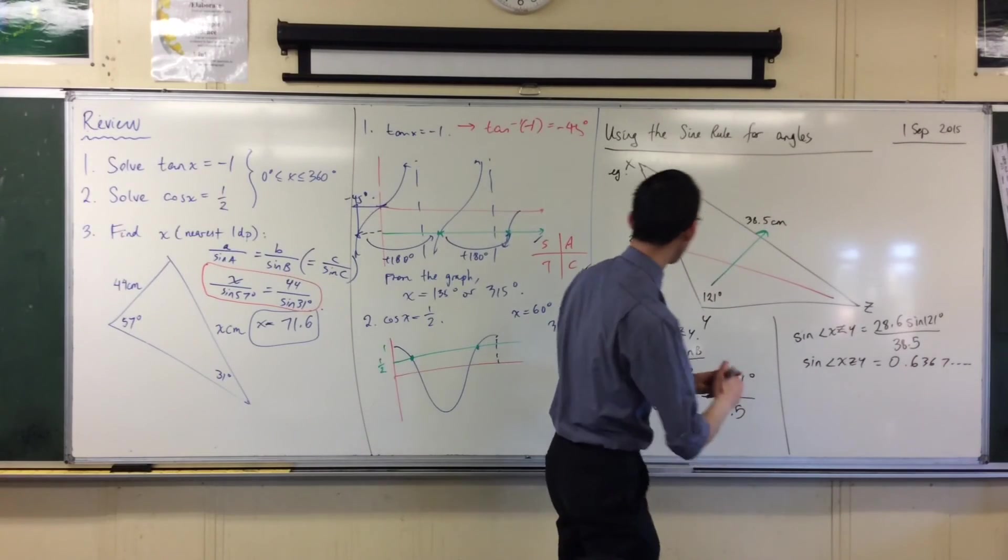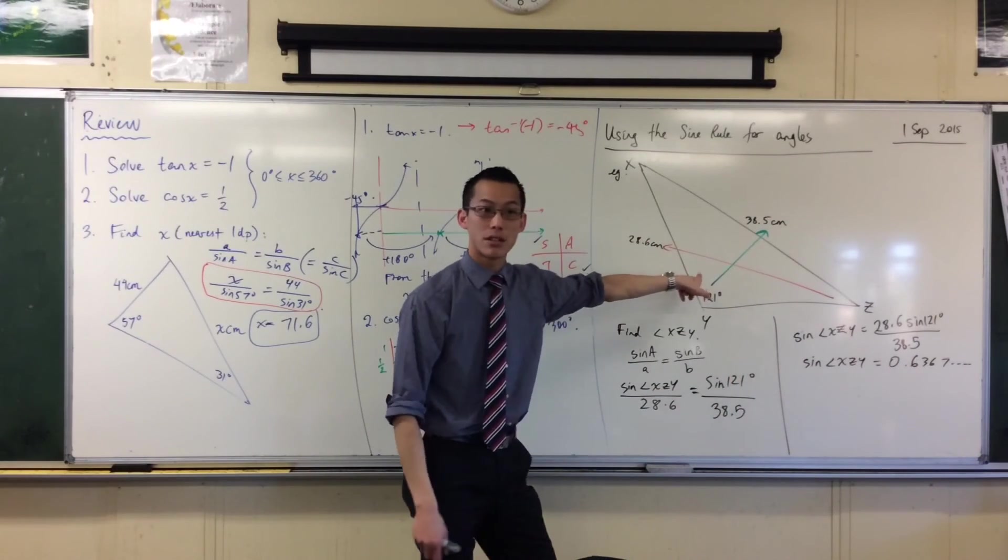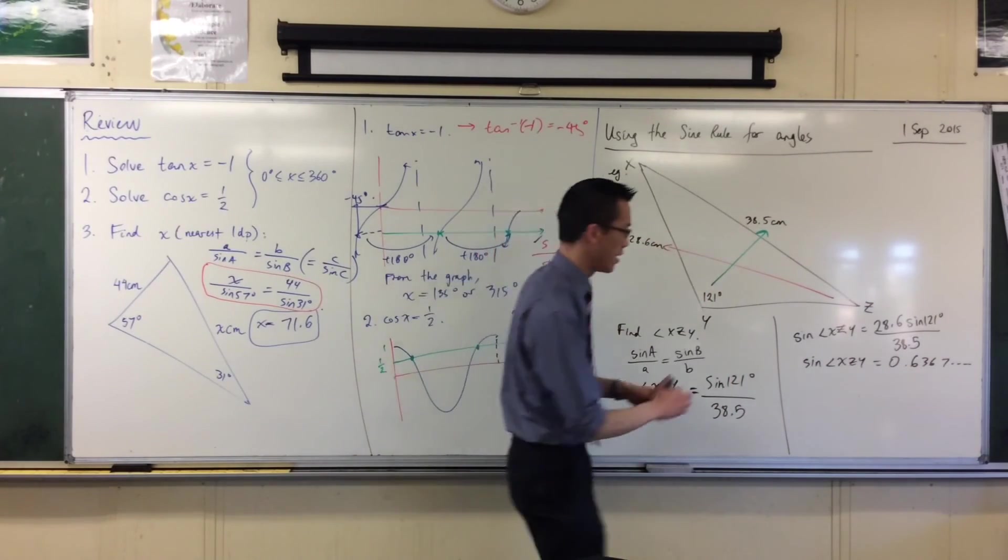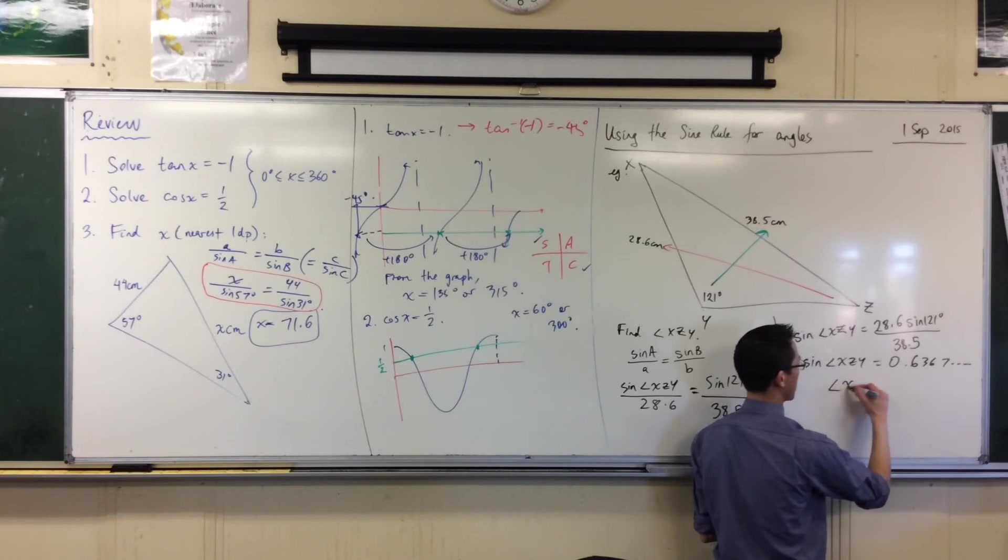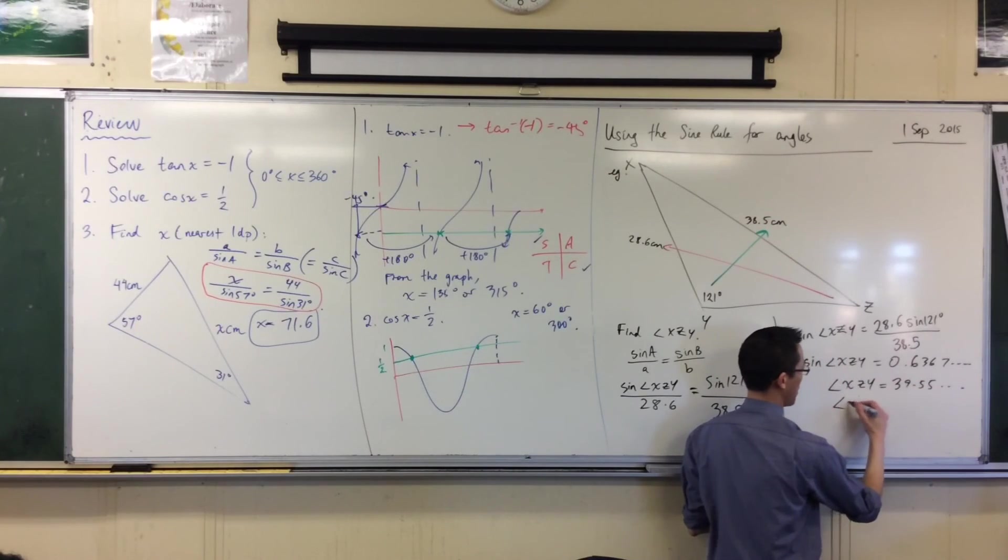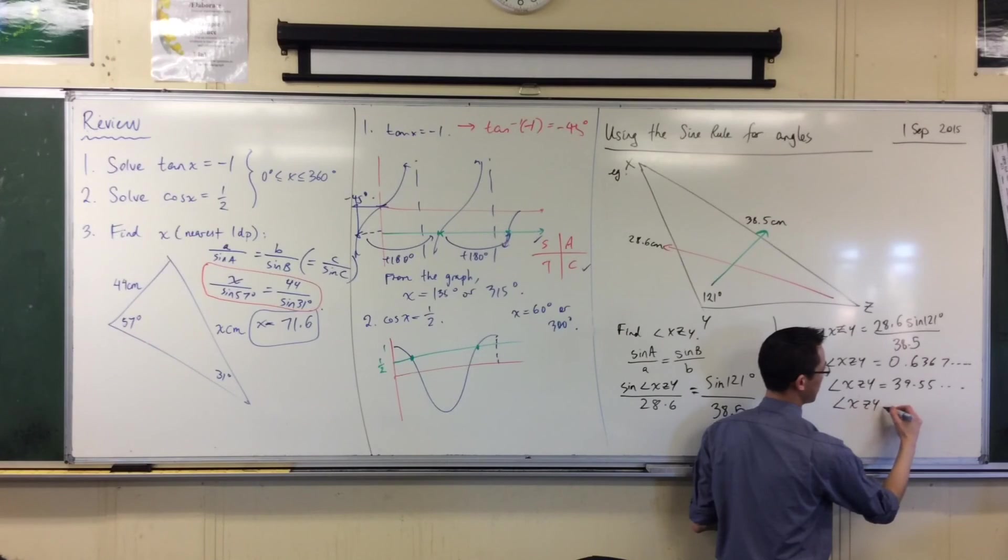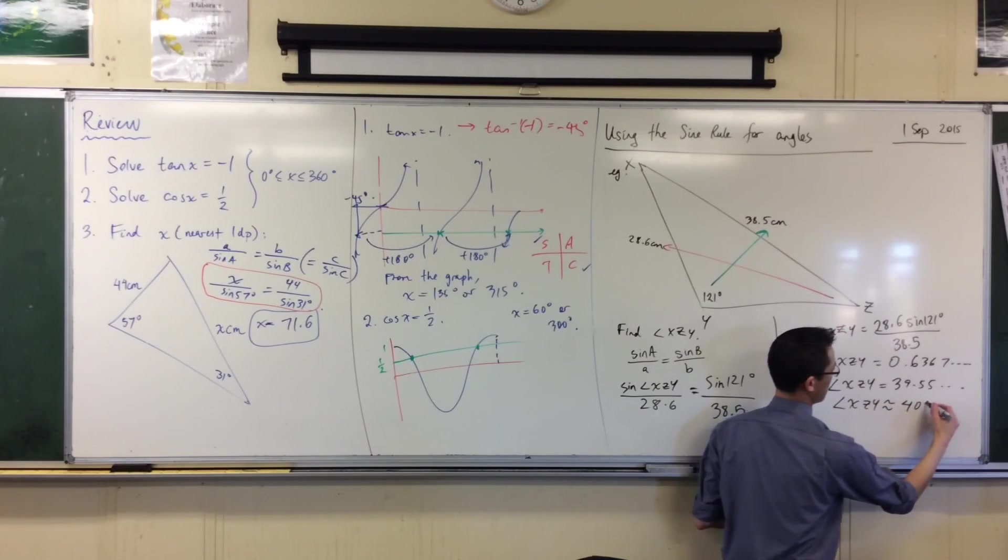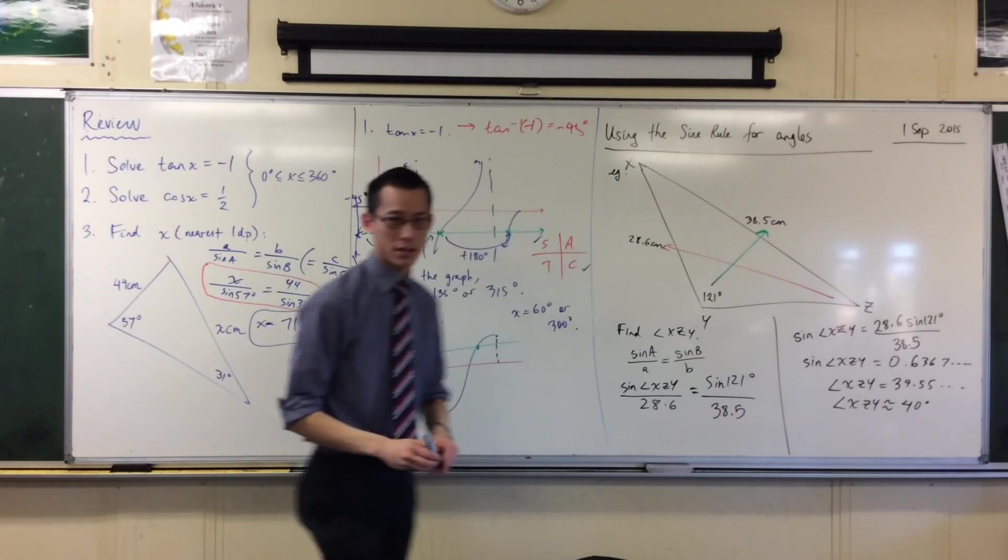So if we go, what have I given it to you? Let's go nearest unit, nearest degree. Okay. So we're getting XZY being 39.55 blah, blah, blah. Right? So now I will approximate. Okay. There to the nearest unit.